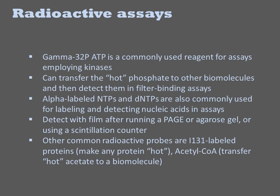Another common reagent is gamma-32P ATP. Amongst other uses, it is great for monitoring kinase reactions. Whenever the recipient molecule is a polymer, you can detect its labeling using the filter binding assay. So gamma-32P filter binding assays can be used to watch kinases that phosphorylate proteins. Many assays will involve body-labeling a nucleic acid with radioactivity. This is done by doping in alpha-32P labeled NTPs or dNTPs during synthesis of the nucleic acid. The radioactivity will then cause the bands to light up after separation on a PAGE or agarose gel. Other common radioactive probes are I-131 labeled proteins and radioactive acyl-CoA, here as alpha-32P.